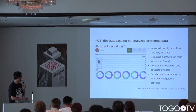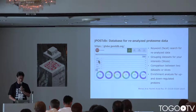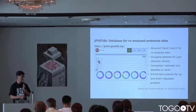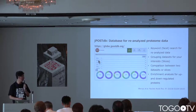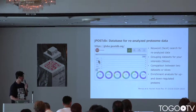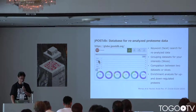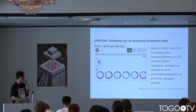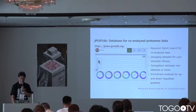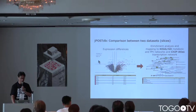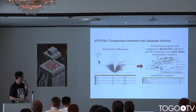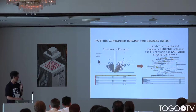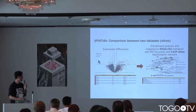This is a query interface. We annotate and put metadata to all the datasets in the database so that you can query using controlled vocabulary for samples, proteins, disease, or other information. You can also compare two datasets for expression differences and map to KEGG metabolic and PPI networks. We also have an interface to ChIP data for the transcription network.